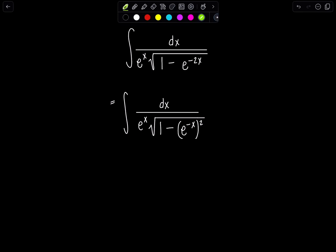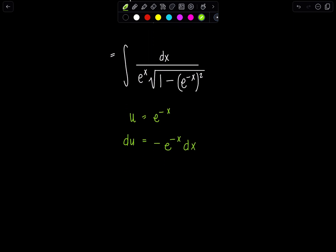You're like, oh, oh, oh, let u equal e to the negative x. That's right. And then du would be negative e to the negative x dx. And remember, e to the negative x, I can rewrite that. Let's keep that negative, though, as 1 over e to the x dx.